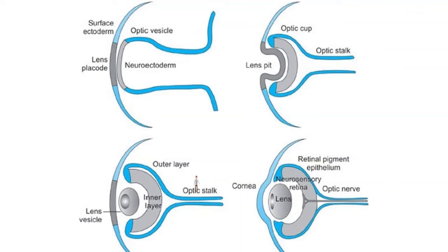The optic cup has two layers: an outer layer and an inner layer. The outer layer will form the retinal pigment epithelium, while the inner layer will form the neurosensory retina. This is a very important piece of information, as it will give insight into the pathology of retinal detachment.